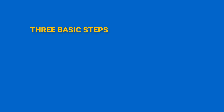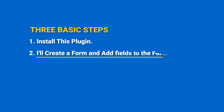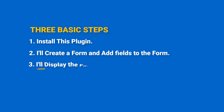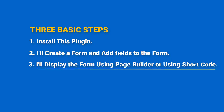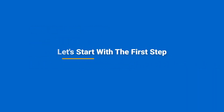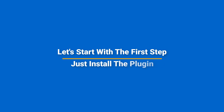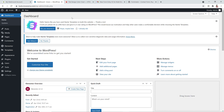Let's get started. I'll do the job in three basic steps: first, install and activate the plugin; second, create a form and add fields; and third, display the form using a page builder or shortcode. Let's start with step one — installing the plugin.